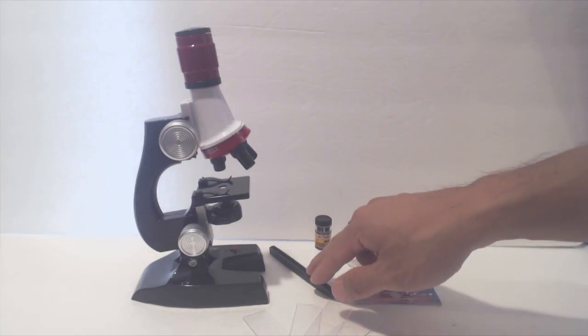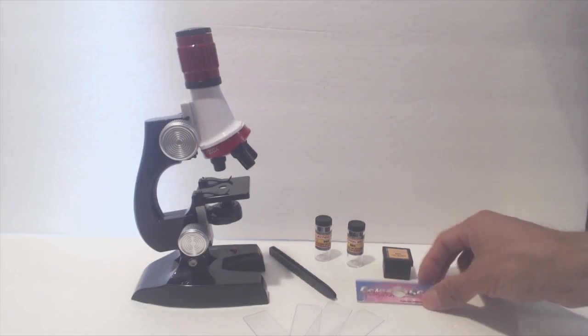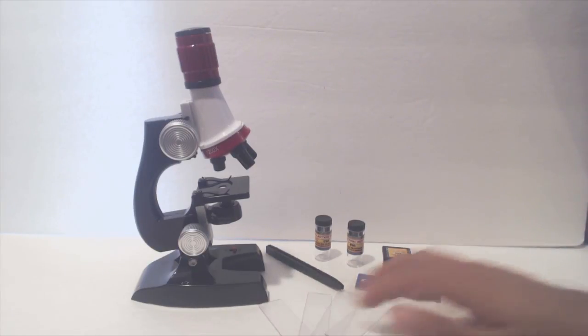You'll receive the microscope, plastic tweezers, two specimen vials, a box of slide labels, a sample slide with fibers in it, and four blank plastic slides.